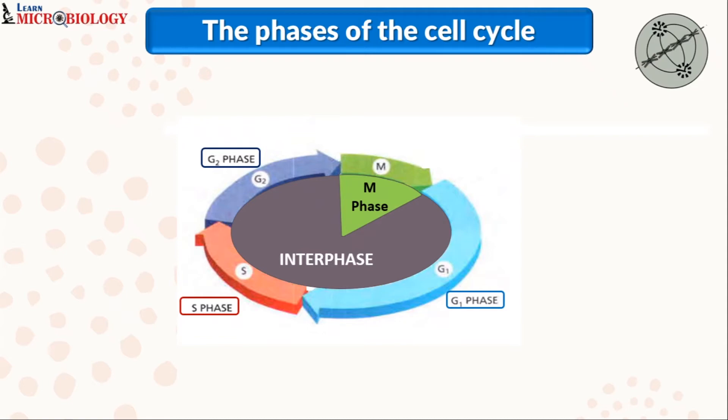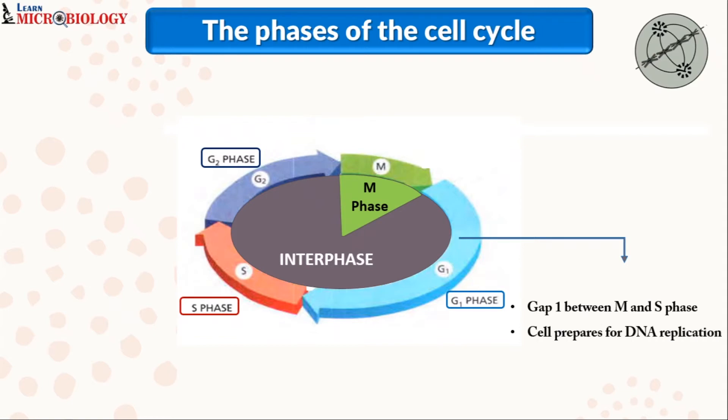The G1 phase is called the gap 1 phase — the gap between the M and S phase. During this phase, the cell prepares itself for DNA replication. The cell also has the option during this phase to exit the cell cycle and go to a resting phase, which is known as the G0 phase.